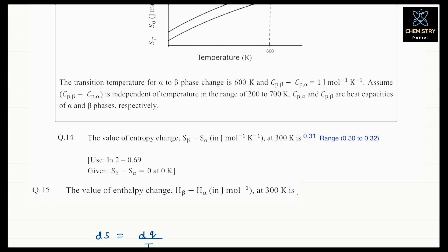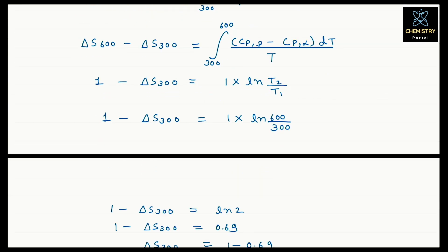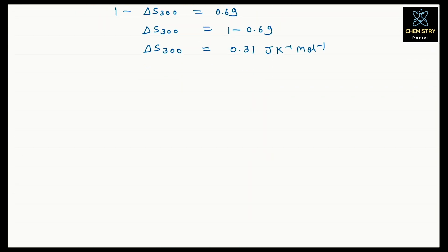Next question: the enthalpy change, delta H_beta minus H_alpha, in joule per mole at 300 K. The enthalpy change formula is N times Cp times dT. For the phase transformation, delta H at 600 minus delta H at 300 equals (Cp_beta minus Cp_alpha) into delta T.